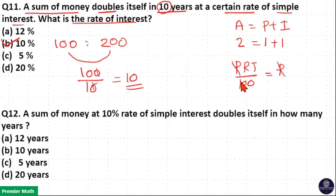Since principal equals interest, P and P cancel. Time duration is 10 years, so RT equals 100, and R equals 10.